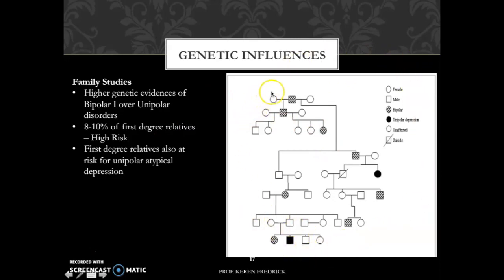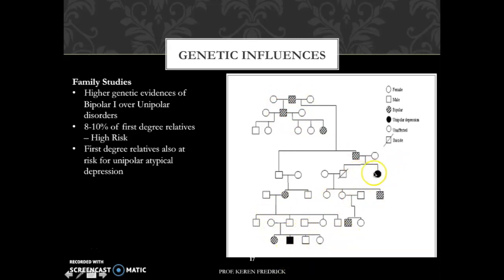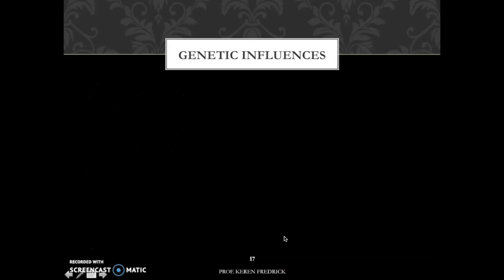Here we are seeing a family pedigree chart. In this family pedigree chart, a circle represents a female and a square represents a male. A square with stripes represents bipolar disorder, whereas solid squares or circles represent unipolar depression. We can notice that bipolar disorder having a diagnosis at the beginning seems to run in the family along the family tree, and a few family members also seem to have unipolar disorder.